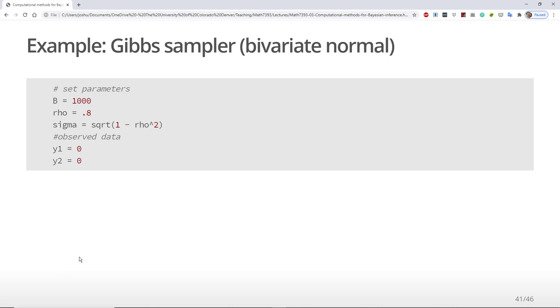Let's look at the code we would use to do this in R. First, we set the relevant parameters. B is the number of cycles, which I set to be equal to 1000. Rho is the correlation between y1 and y2. And sigma is the standard deviation of each of the full conditional distributions. Then we set the values of the observed data y1 and y2 equal to 0.